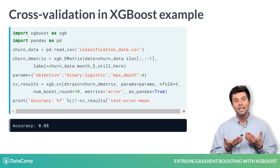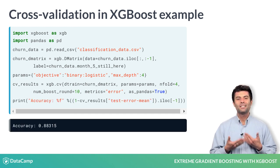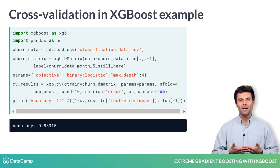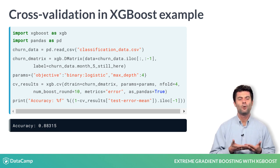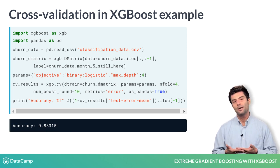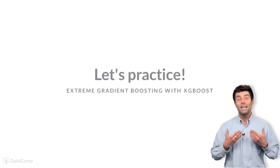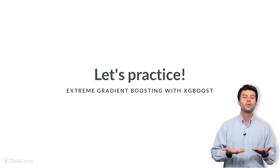In line 7, we simply convert our metrics into an accuracy and output the results to screen. And now, it's your turn.